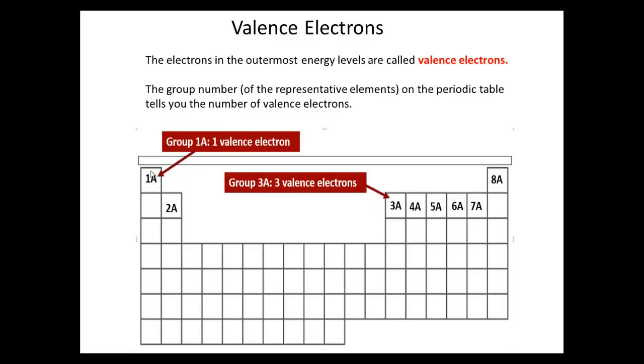Your group 1A has one valence electron. Your group 2A has two valence electrons. Your group 3 has three valence electrons. Four, group 4, has four valence electrons. Group 5 has five valence electrons. Six, six valence electrons. Seven, seven valence electrons. And eight, eight valence electrons. Very simple. And it's really nice that you could just actually look at the numbers on the periodic table, by their groups, and know their valence electrons.